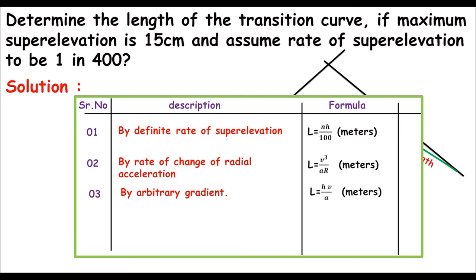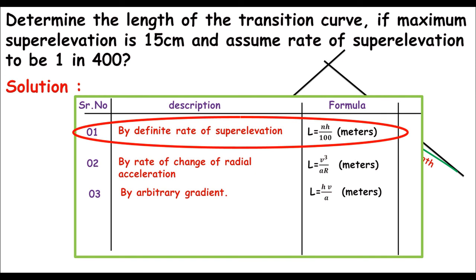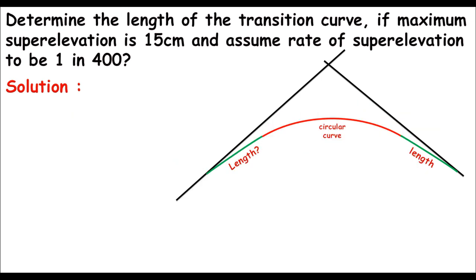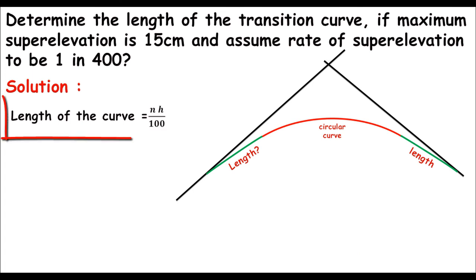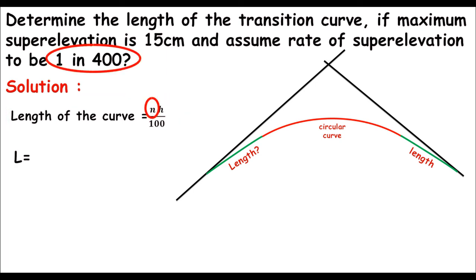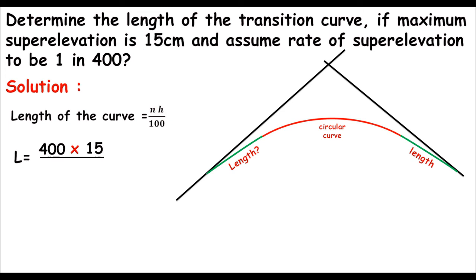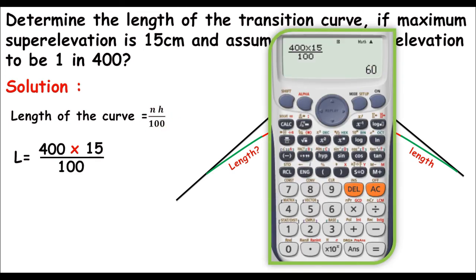In the example, we are given the maximum super elevation and the rate of super elevation, so we use Method 1 — the rate of super elevation formula. The length of the transition curve is: L = N × h / 100. Plugging in the values: N is 400 (from the rate 1 in 400) and h is 15 centimeters. So L = 400 × 15 / 100 = 60 meters. That is how we determine the length of the transition curve.